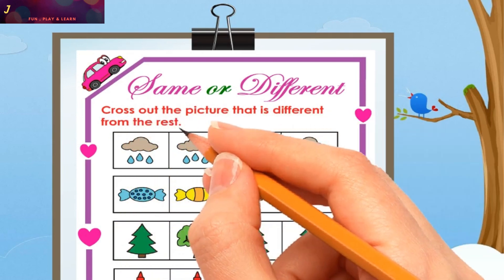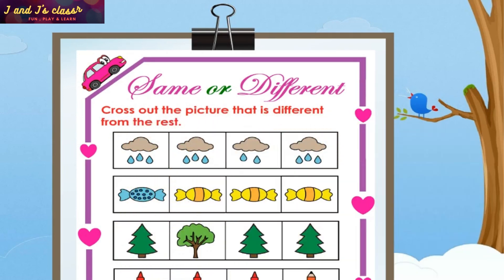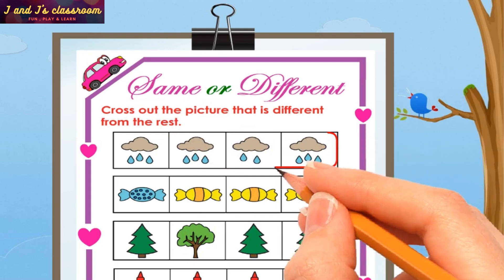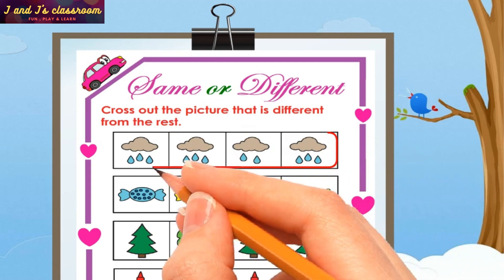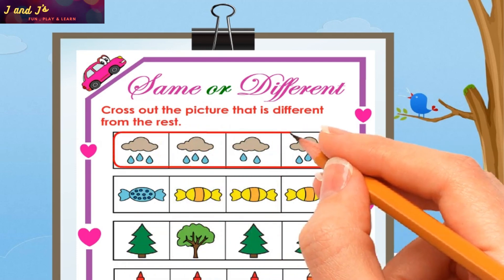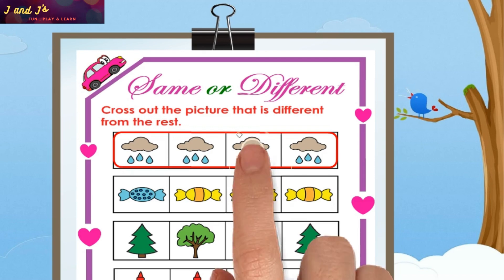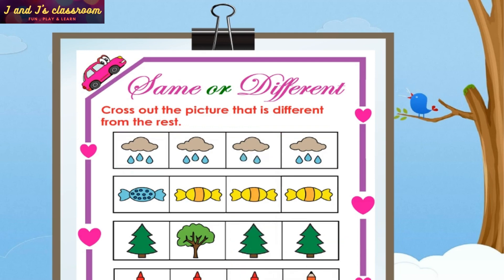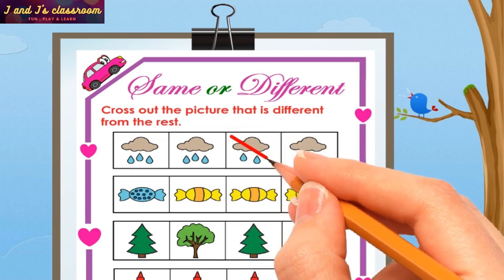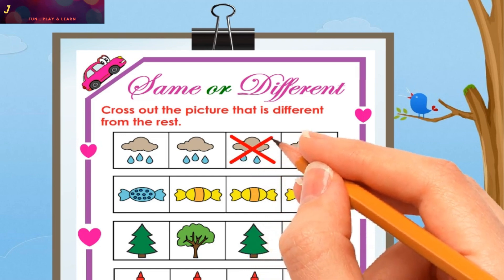Look at the first row — there are four raining clouds. Which one is different in the group? Can you guess? This cloud! Oh yeah, cross out this raining cloud.